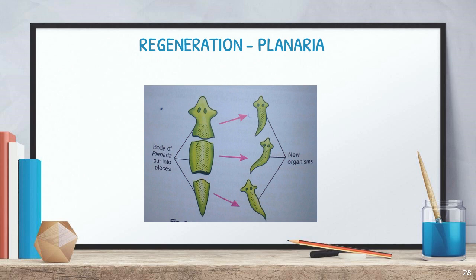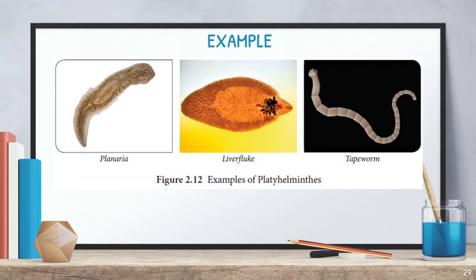A very special character of Platyhelminthes — especially Planaria — is regeneration. If Planaria's body is cut into pieces, each piece can become a new individual organism. Examples of Platyhelminthes include Planaria, liver fluke, and tapeworm.